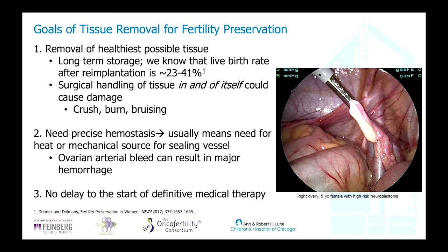As far as goals of tissue removal, we know that it is a primary goal to remove the healthiest possible tissue. We know this tissue will be stored long-term — especially for a pediatric patient, that may be decades. The live birth rate as reported worldwide after re-implantation, based on a New England Journal article, is about 30 to 39 percent, varying from 23 to 41 percent.